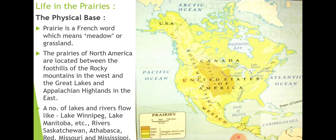A number of lakes and rivers flow through the prairies, such as Lake Winnipeg, Lake Manitoba, Saskatchewan, Athabasca, Red, Missouri, and Mississippi. These water bodies provide water for irrigation purposes and fulfill the water requirements of the region.